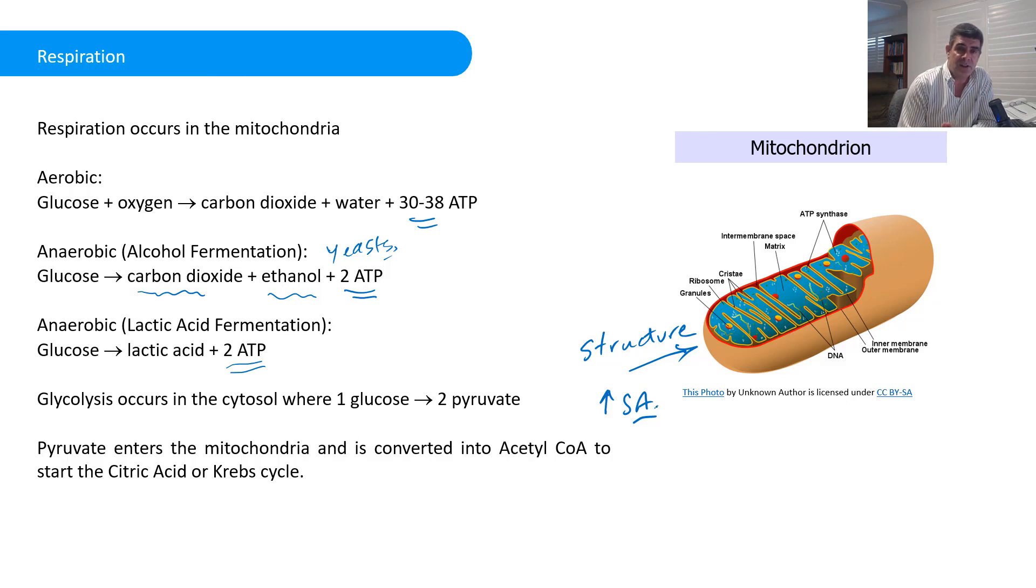The glucose itself doesn't actually enter the mitochondria for the process of respiration. What happens is glycolysis happens first, and that happens in the cytosol. So that's part of the cytoplasm, where one glucose molecule will be broken down into two pyruvate molecules. These are three carbon molecules, the pyruvates. And they will be transported into the mitochondria, where the first thing that will happen to them is they'll be converted. They'll release a carbon dioxide and be converted into a two-carbon complex with the acetyl coenzyme A.